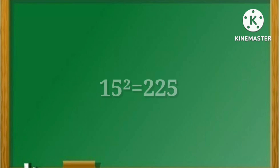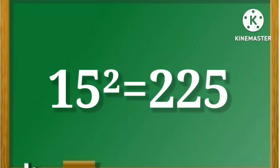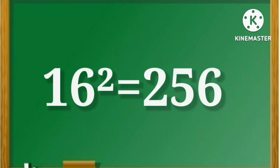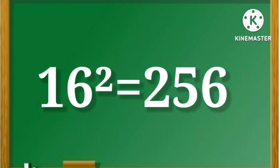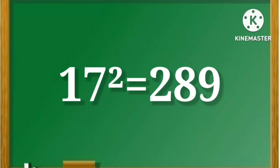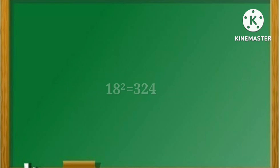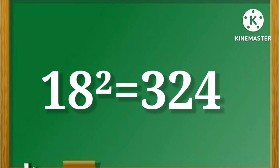14 square is equal to 196. 15 square is equal to 225. 16 square is equal to 256. 17 square is equal to 289. 18 square is equal to 324.